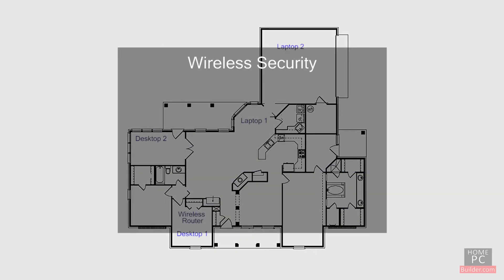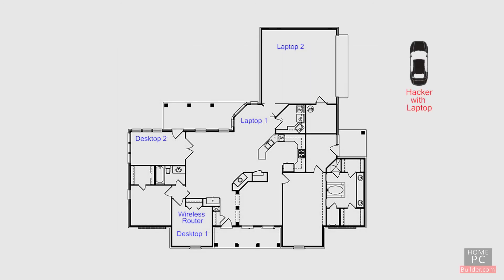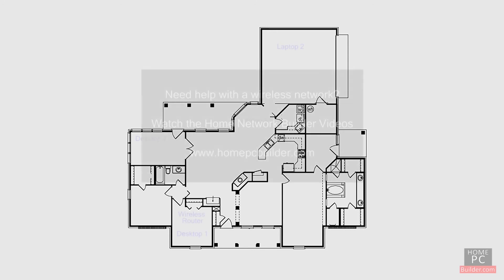Since the data is going through the air, you need to consider security. For this, look for the WPA or WPA2 security specification on both the wireless adapter and wireless router. Enabling either of these modes on both the adapter and the router, along with a strong encryption key, will make sure your network and all your data is secured from others who may try to access your network without your permission.